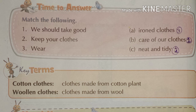Key terms. Cotton clothes: clothes which are made from cotton, which we obtain from cotton plants, are called cotton clothes. Woolen clothes: clothes which are made from wool are called woolen clothes.